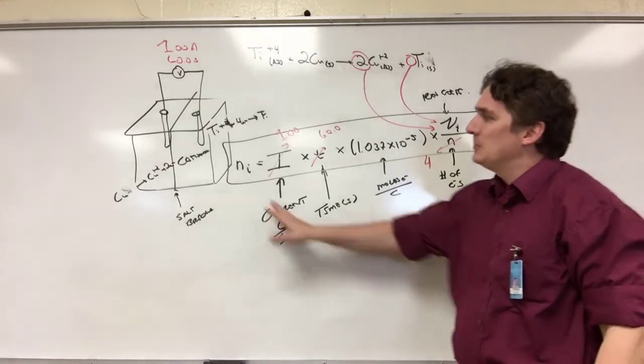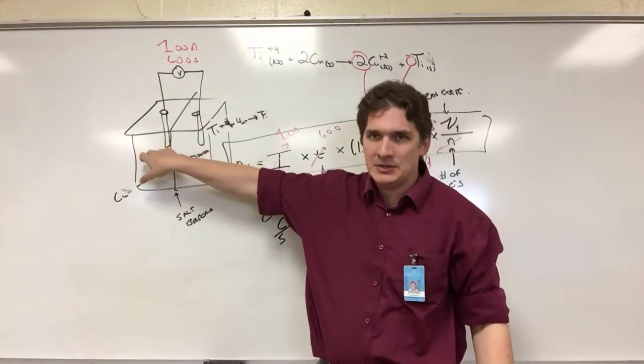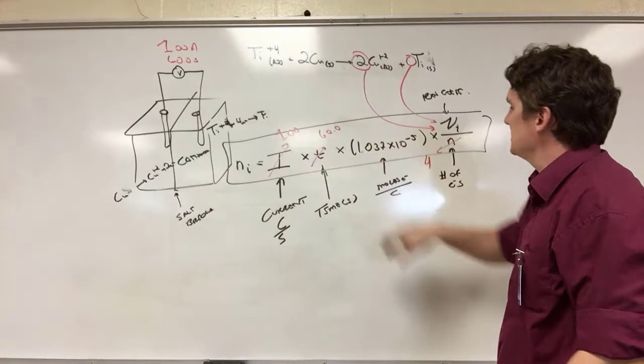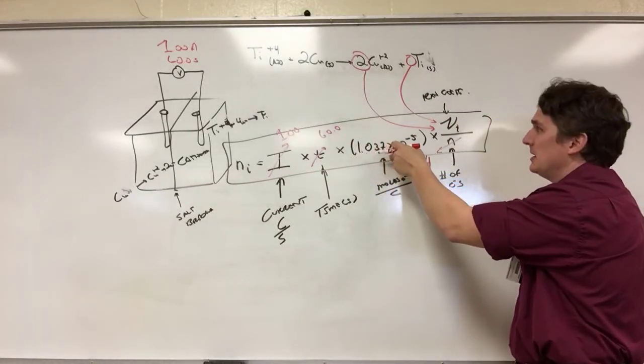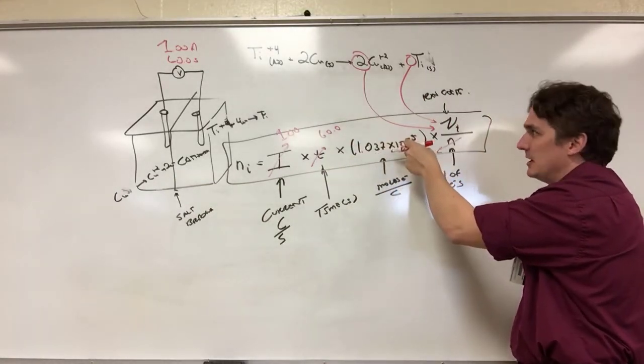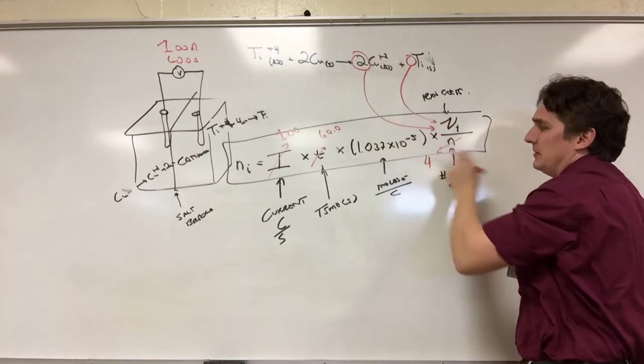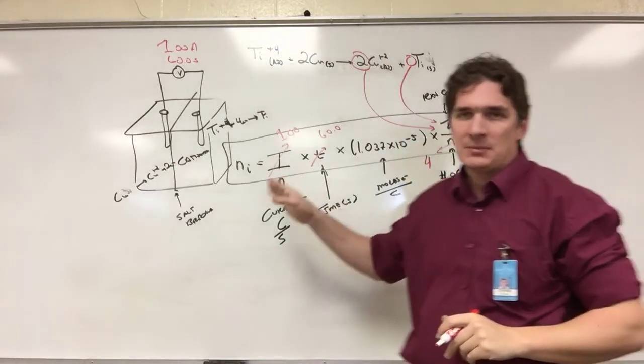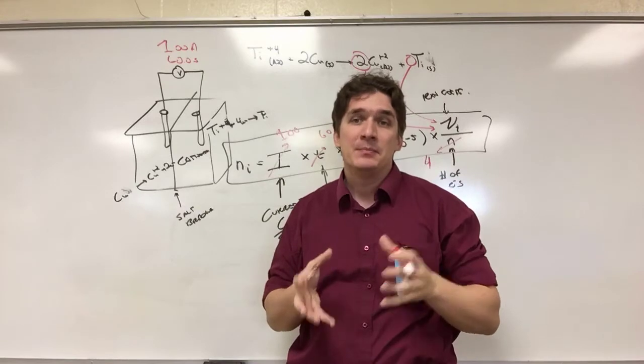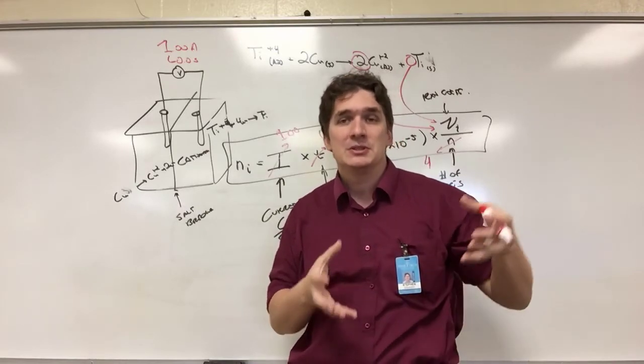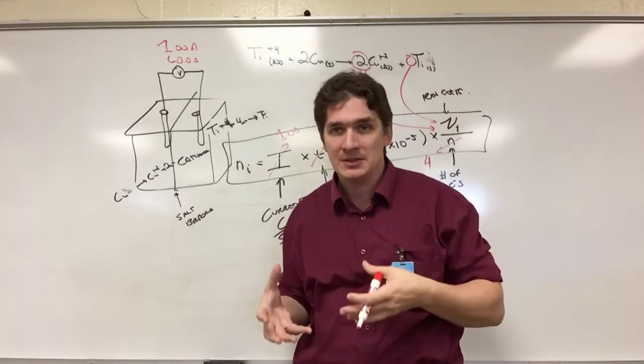To figure out the moles of copper lost at the copper electrode: one times 60 times 1.037 × 10⁻⁵ times two divided by four. This gives us moles of copper. To figure out how many grams of copper were lost at the electrode, we just convert from moles of copper to grams of copper.